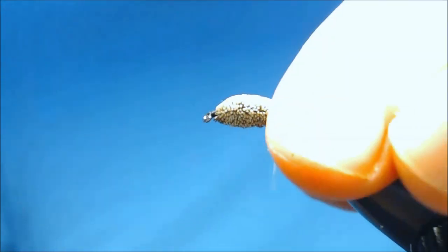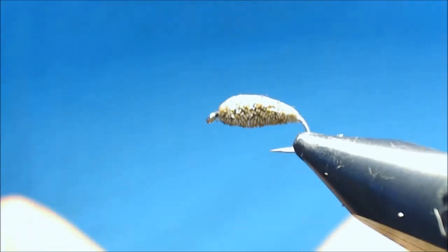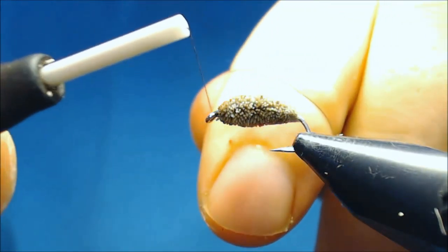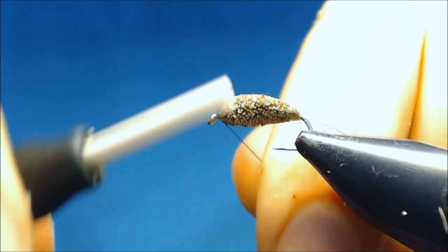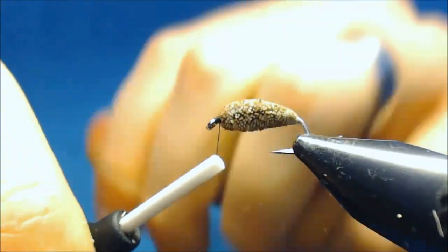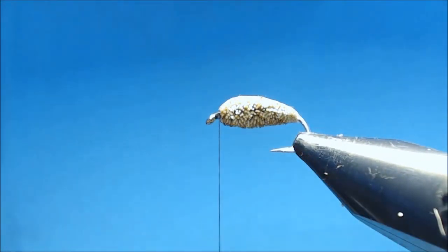And now we'll tie in or start thread again at the eye of the hook. And the last material to tie in is some hackle. Here you can use partridge in different colors. Brown, black, natural gray or natural brown.